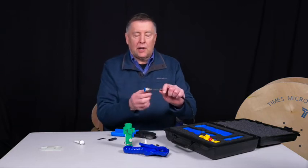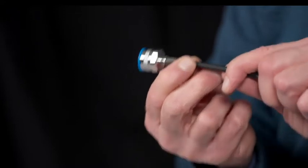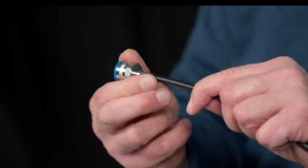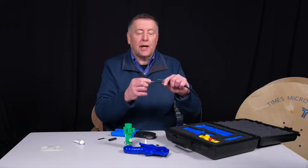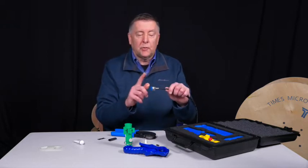You don't want to crimp it a second time. If you do, you're going to pinch the jacket, crush the core, and you're going to diminish the electrical performance. By design, we wanted the jacket and the crimp ferrule to overlap. So crimp it just once.